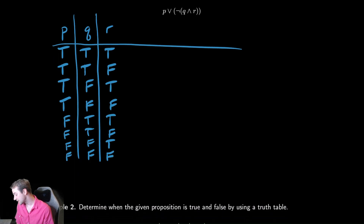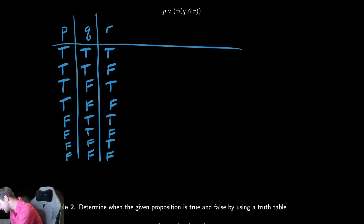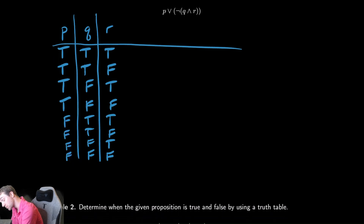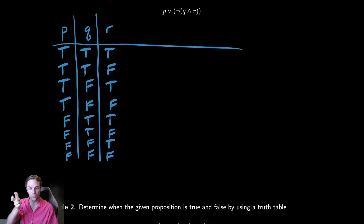Some people like to memorize the pattern here. The first column has four trues and then four falses. The next column has a repeating pattern of two trues, two falses, two trues, two falses. And the last column alternates true, false, true, false throughout all eight rows.